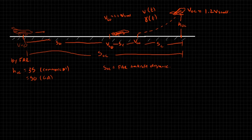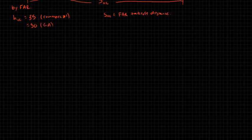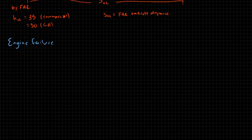This is the best-case scenario for an aircraft. Now let's talk about what happens if we have engine failure. We'll consider an aircraft with two engines, like your typical commercial airliner, sitting on a runway.